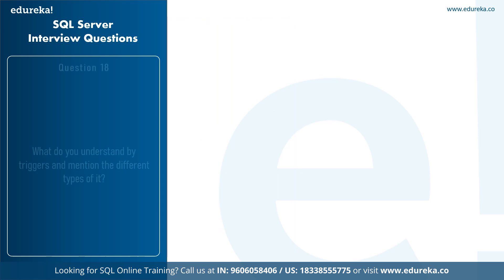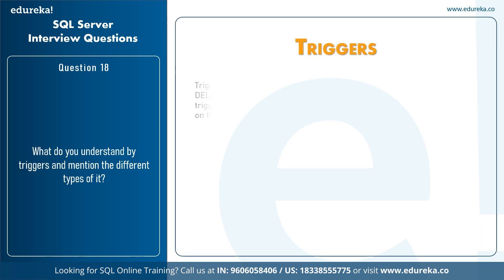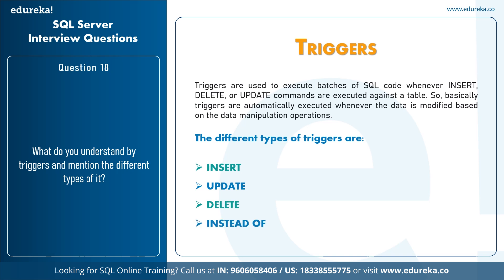The next question is: what do you understand by triggers and what are the different types? Triggers are used to execute batches of SQL code whenever INSERT, DELETE, or UPDATE commands are executed against a table. Triggers are automatically executed whenever data is modified based on data manipulation operations. The different types of triggers are: INSERT, UPDATE, DELETE, and INSTEAD OF.